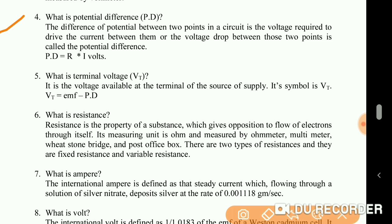What is terminal voltage? It is the voltage available at the terminal of the source of supply. Its symbol is VT. VT equals EMF minus potential difference.